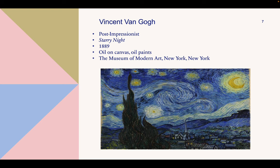The eleven stars in this painting represent a biblical meaning and are seen as a reference to Joseph. The painted cypress trees were intentionally included because they are associated with death and cemeteries. "Starry Night" is located at the Museum of Modern Art in New York, New York.